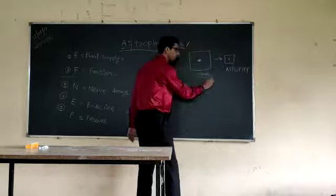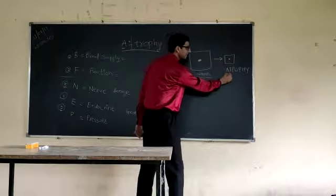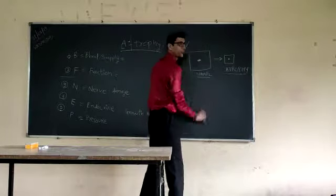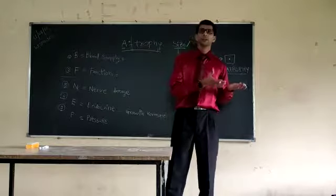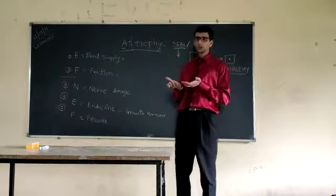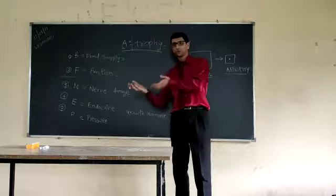Means this is normal cell, its size is reduced and it is atrophy itself. So commonest example is we can say in old age also, there is we can see atrophy.